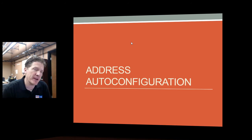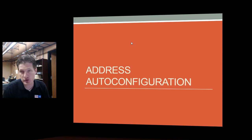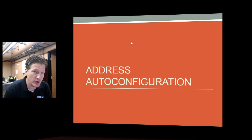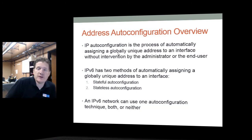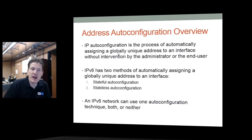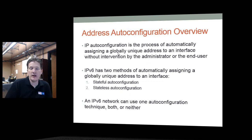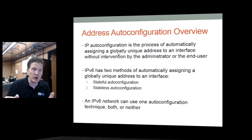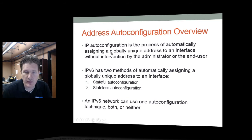Let's talk about another major feature of IPv6: auto-configuration. Manually assigning IPv6 addresses could be time consuming. Auto-configuration is the process of automatically assigning a globally unique address to an interface without someone having to go to that machine to program it. IPv6 has two ways of doing this: stateful auto-configuration and stateless auto-configuration. A network can use either one, both at the same time, or neither.